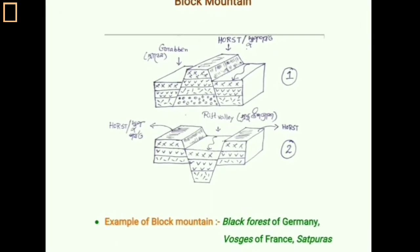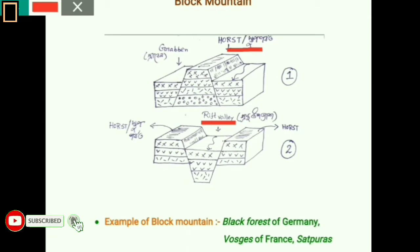Looking at the diagrams: in diagram one, the middle part of the crustal block between two parallel faults has been uplifted vertically, forming the horst or block mountain, while the two adjacent areas are the graben. In diagram two, the middle part has subsided, forming a rift valley, and the two adjacent static areas are the up-thrust block mountains.